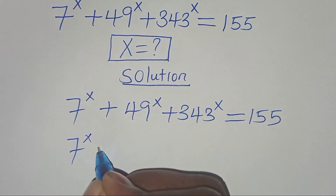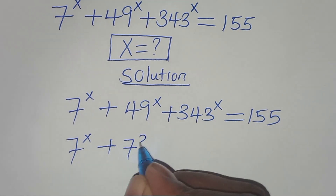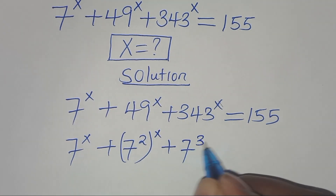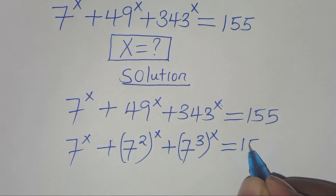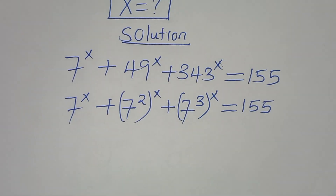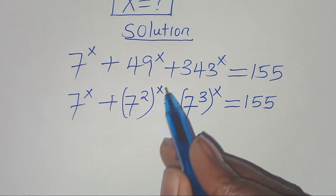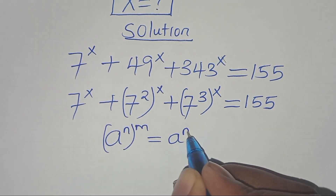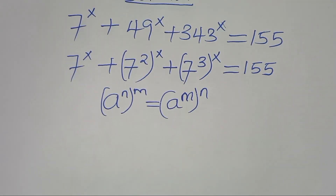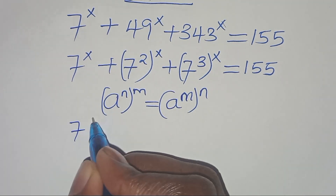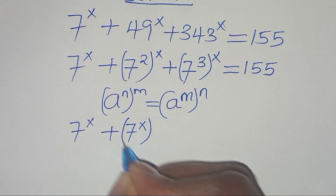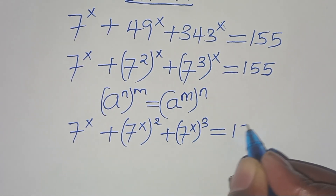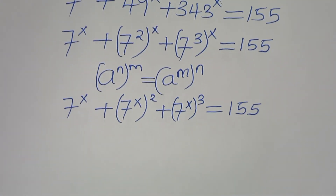So we have 7 to the power x, plus 49 to the power x — this is the same thing as 7 squared raised to the power x — then plus 343 raised to the power x, which is the same thing as 7 raised to the power 3, raised to the power x, this is equal to 155. Applying the exponent property (a^n)^m = a^(nm), this becomes 7 to the power x, plus 7 to the power x raised to the power 2, then plus 7 raised to the power x raised to the power 3, this is equal to 155.